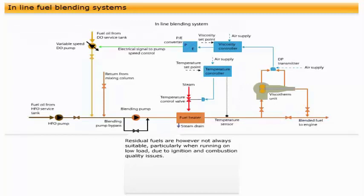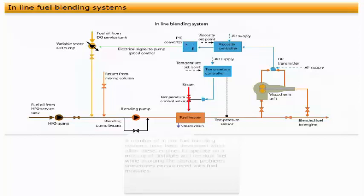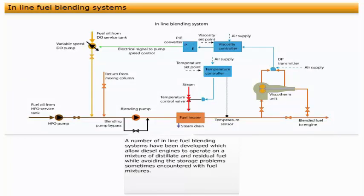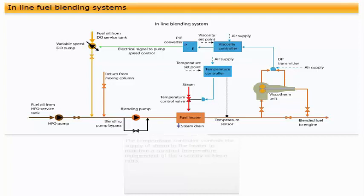Many auxiliary engines are designed to operate on fuels other than clean distillate fuels. Residual fuels are, however, not always suitable, particularly when running on low load due to ignition and combustion quality issues. A number of in-line fuel blending systems have been developed, which allow diesel engines to operate on a mixture of distillate and residual fuel, while avoiding the storage problems sometimes encountered with fuel mixtures.